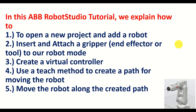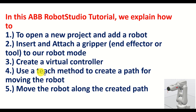More precisely, in this ABB Robot Studio tutorial we explain how to open a new project and add a robot to our workspace and project. Then we explain how to insert and attach a gripper to a robot model. A gripper in robotics literature is also known as an end effector or a tool. Then we explain how to create a virtual controller for controlling the robot motion, how to use a teach method to create a path, and finally how to quickly program the robot so the end effector moves along the created path.